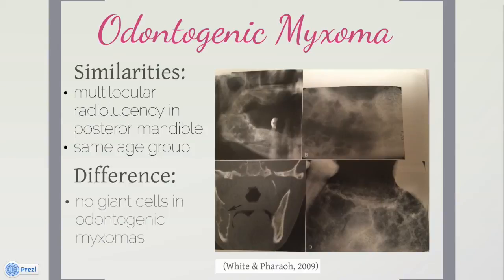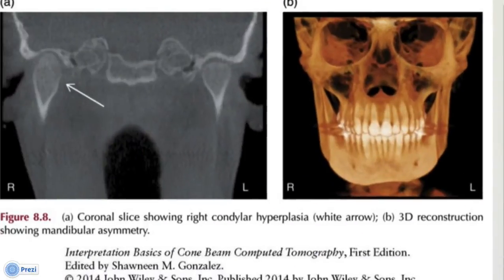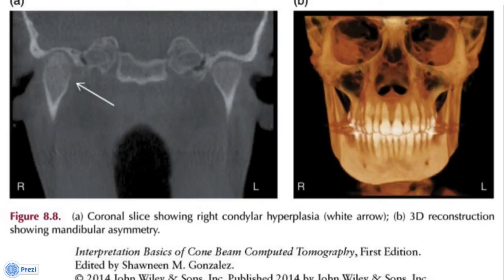Odontogenic myxoma can be mistaken for aneurysmal bone cysts since it is also a multilocular radiolucency found in the posterior mandible and clinically found in patients in their 20s. The lesion would have to be differentiated by histological evidence; an odontogenic myxoma shows microscopic characteristics similar to soft tissue myxomas, excluding giant cells, which sets the lesion apart from ABC. ABC is one of several benign tumors which can be mistaken for hyperplasia, and in some circumstances the lesion might be a combination of the two or very difficult to differentiate radiographically or clinically. Many hyperplasias can be listed as differential diagnoses for the disease.